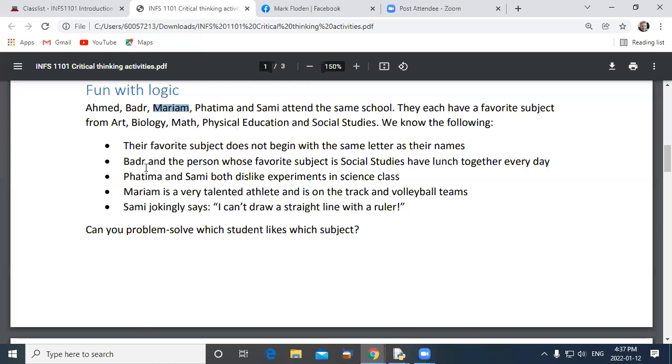Mariam was PE. Fatma was social studies. Opman was biology, Bader was math, Mariam was PE, Fatma was social studies, and Sammy ended up being art by process of elimination.